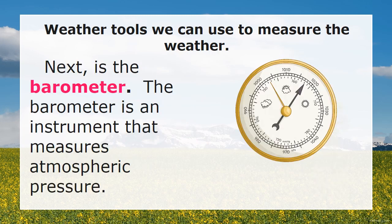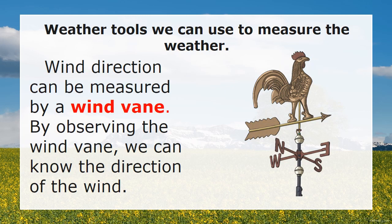Next is the barometer — some people say barometer. The barometer is an instrument that measures the atmospheric pressure. Next, we have the wind vane. Wind direction can be measured by a wind vane. By observing the wind vane, we can know the direction of the wind.